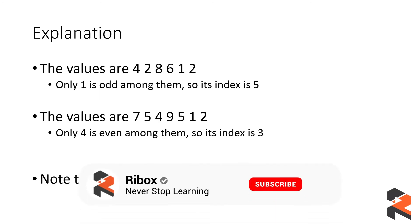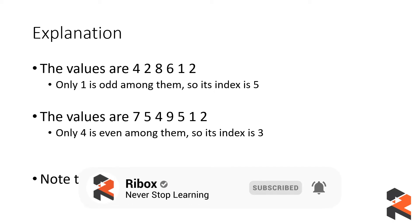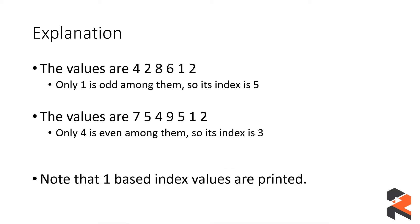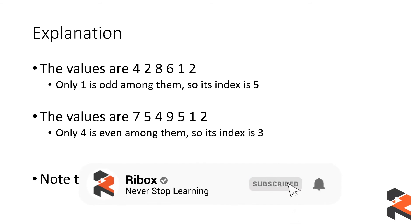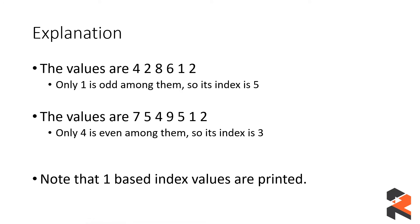For the first case, the values are 4, 2, 8, 6, 1, and 2. Only the number 1 is odd among them, so its index in one-based indexing is 5. Similarly, for the second input, the number 4 is the only even number and its one-based index is 3. So you need to print the index of the number which is unlike the rest — either the one odd number among evens, or the one even number among odds.